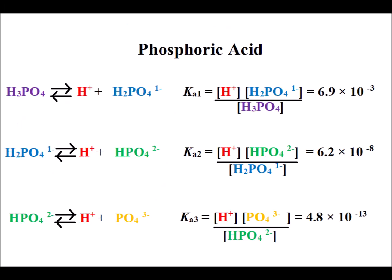Here we have the acid dissociation values for the three different protonation events of phosphoric acid, shown in the same style as our previous video on the derivation of the formula for alpha values, so that you can compare as easily as possible. These are the specific values for phosphoric acid.